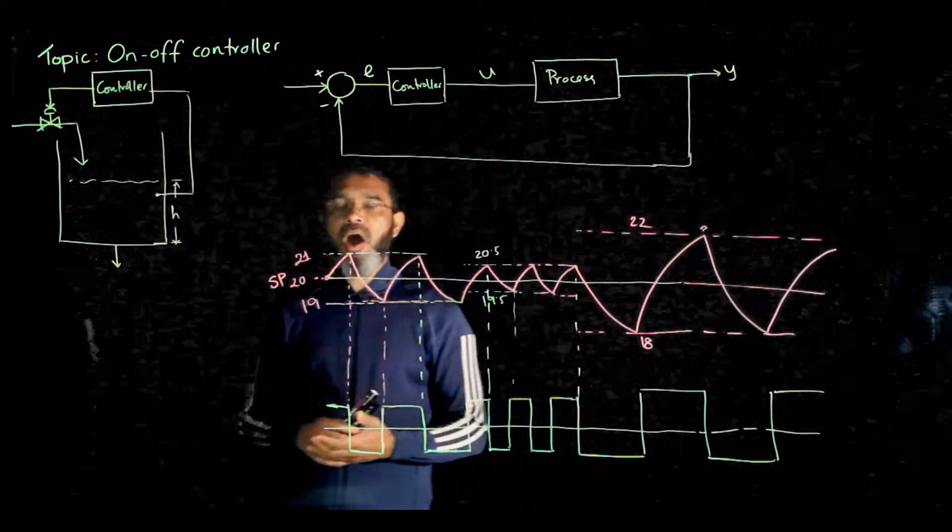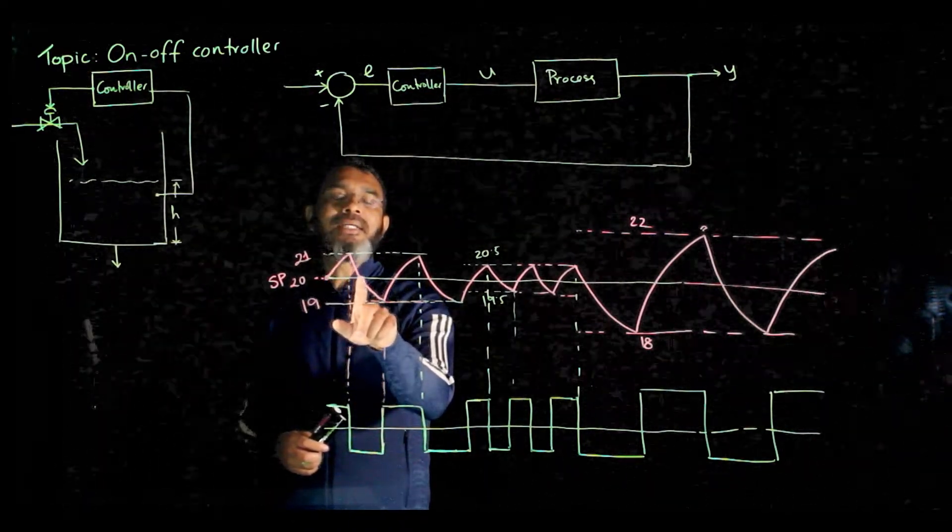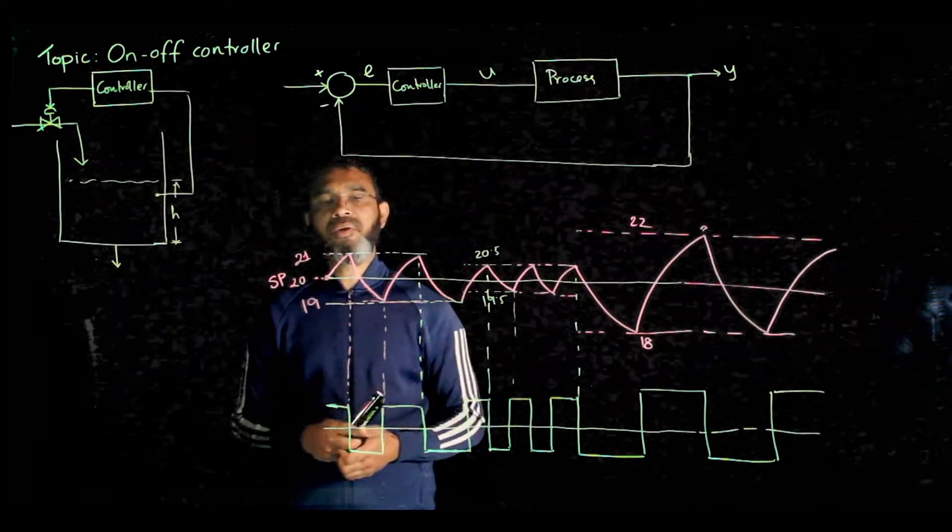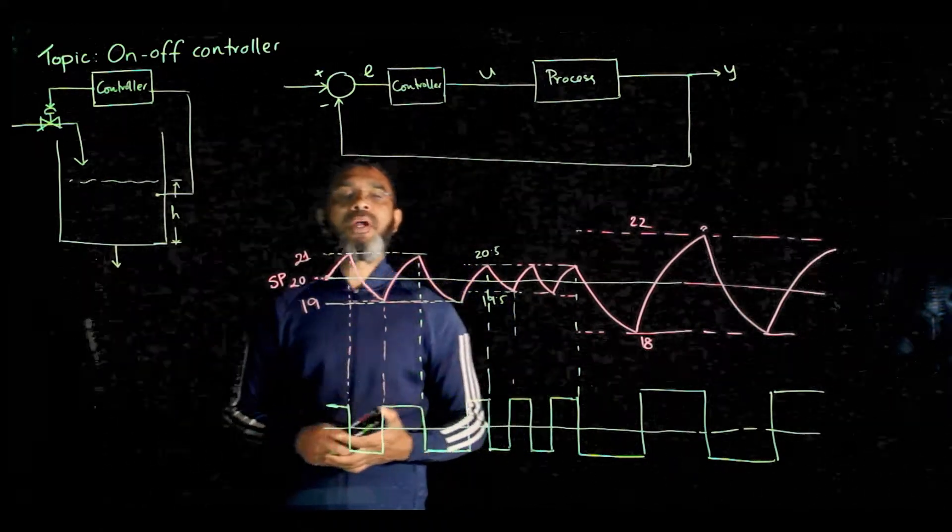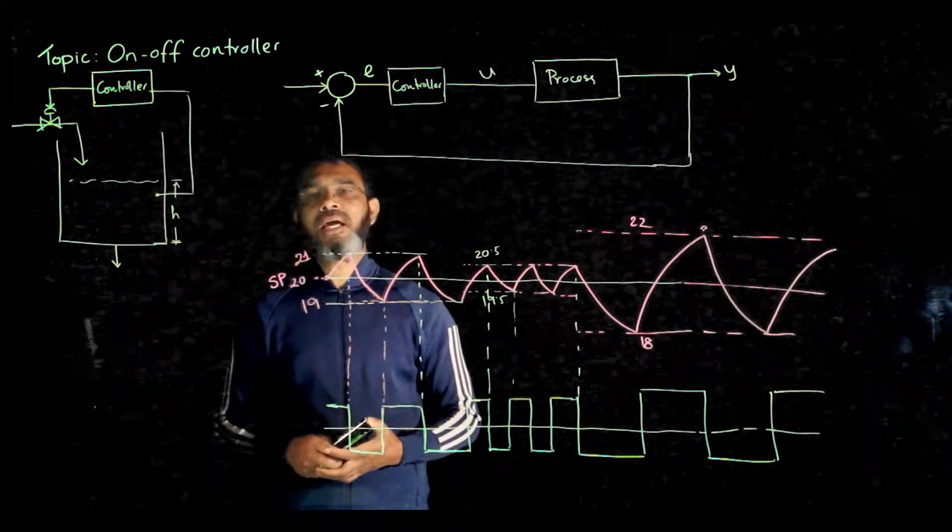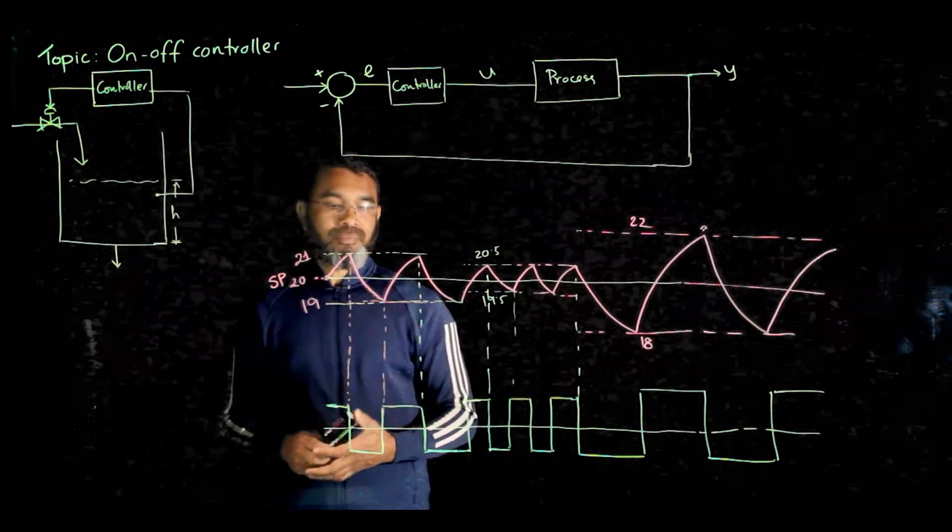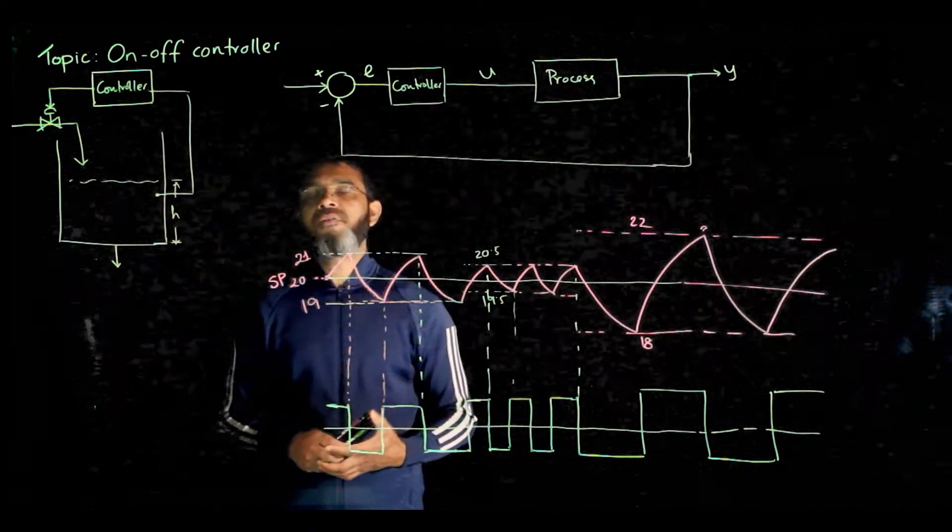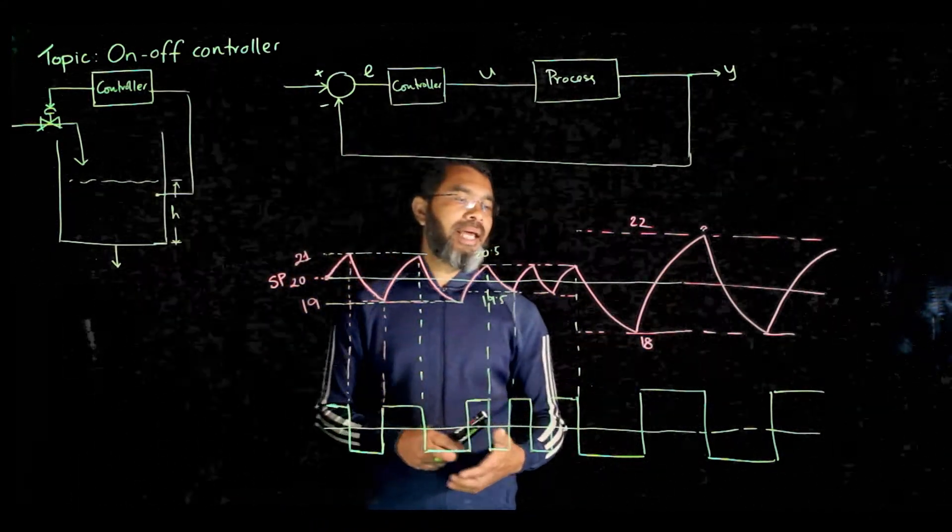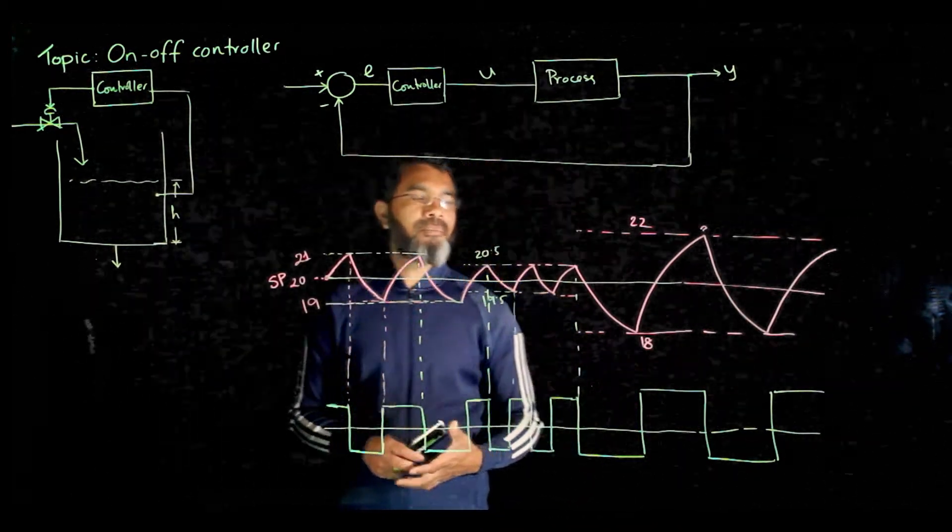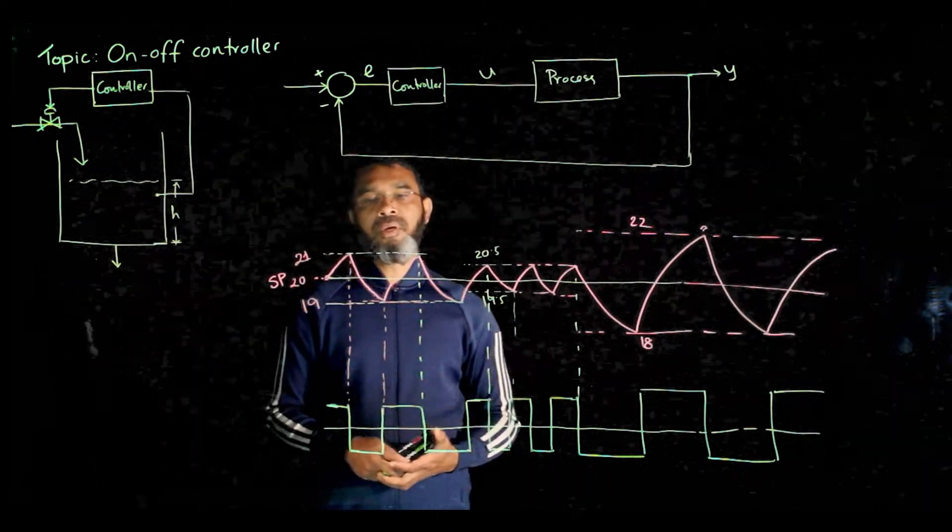So you see that for the on-off controller, one thing is that the output is never steady at the set point value. Rather, it oscillates around the set point between the upper limit and the lower limit, which is called the bandwidth. If you want the bandwidth to be narrower, the turning on and off of the controller will be more frequent. If you can tolerate a wider band, in that case the turning on and off will be less frequent, but that variable will be away from the desired value. So this is the problem with the on-off controller.